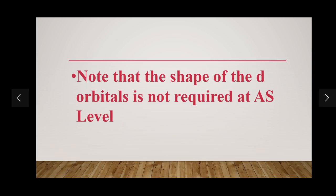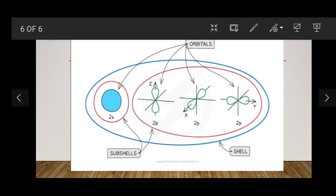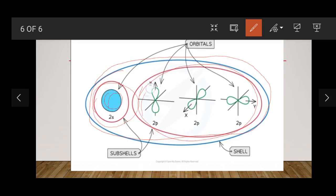The shape of d orbitals and f orbitals is not required at AS level. This diagram gives an overview of shells, subshells, and orbitals. The shells are divided further into subshells, and these subshells are further divided into atomic orbitals. The shell contains subshells, and subshells contain atomic orbitals. Make sure to take note of that.